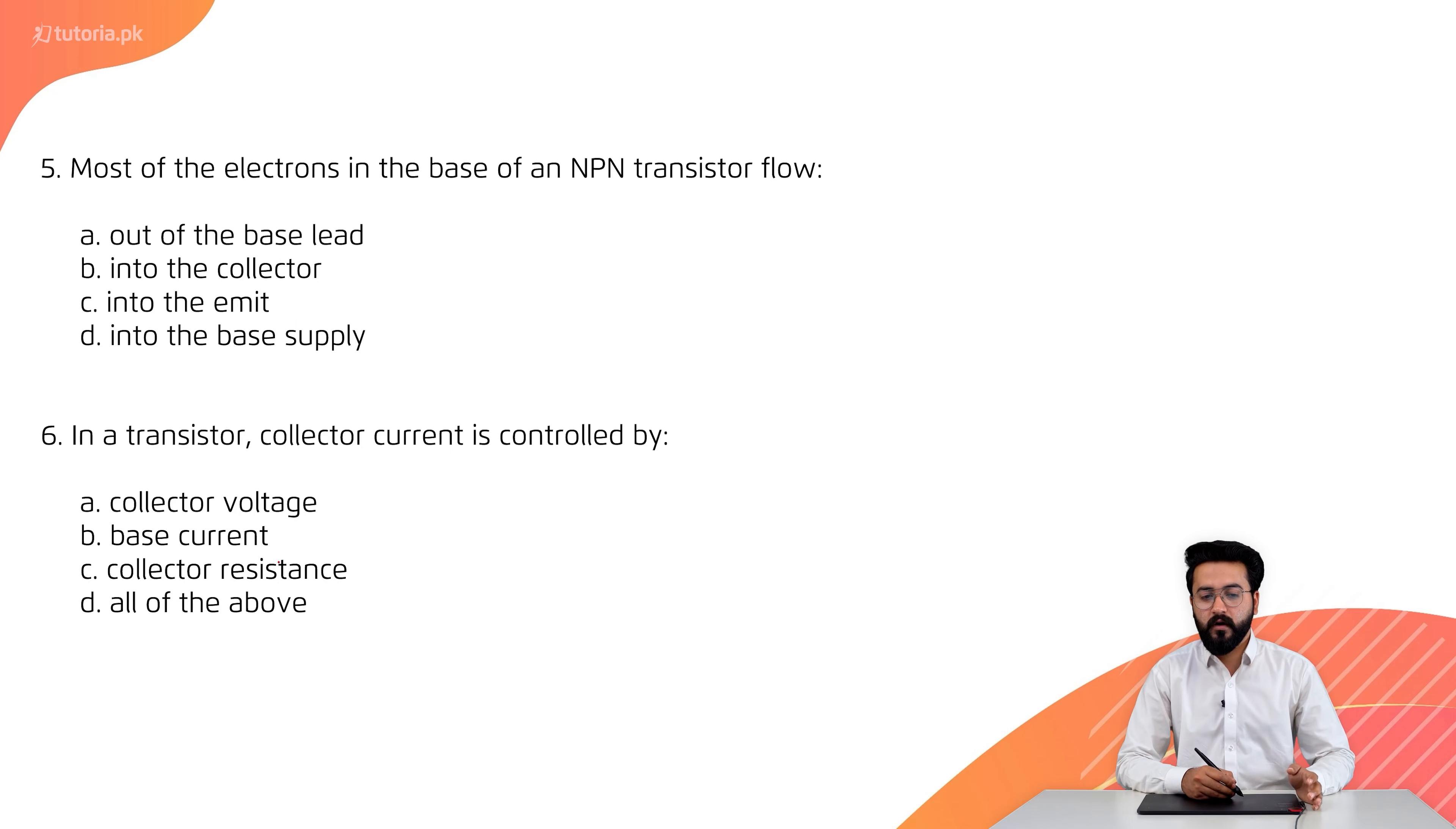Number 5 is, most of the electrons in the base of an NPN transistor flow. The correct option is B, into the collector.